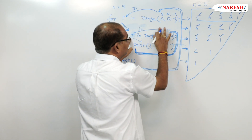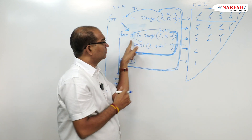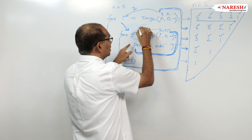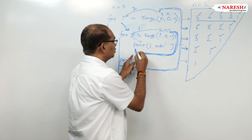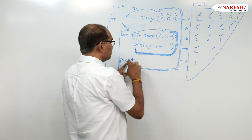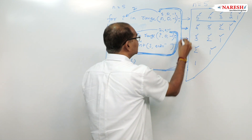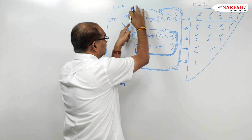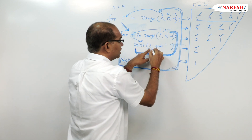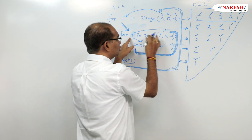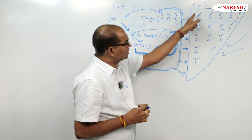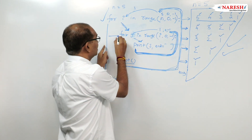Now i is 2. For j in range(2, 0, -1): 2 printed, then 1 printed. 1 minus 1 is 0 — false, coming out. Cursor brought to new line. Back to outer loop, i becomes 1. For j in range(1, 0, -1): 1 printed. Then 1 minus 1 is 0 — stop. Coming out of that, print() moves the cursor. This is the loop logic: the outer loop handles number of rows, the inner loop handles elements in each row.